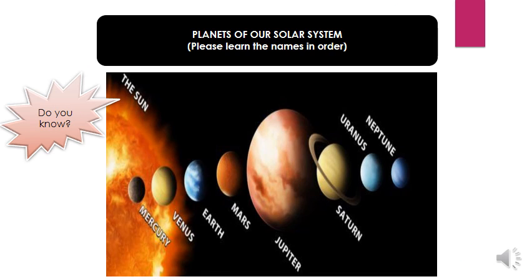We are supposed to learn the planets of our solar system. Please learn their names in order: Mercury is the first, then Venus, Earth, Mars, Jupiter (the largest planet), Saturn (known for its rings), Uranus, and Neptune. I'll be asking the names of these planets in the zoom class, so get ready for that.